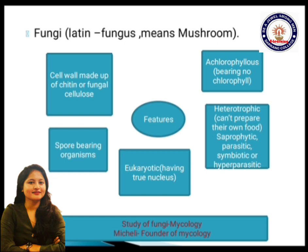Saprophytic mode of nutrition is that type of nutrition in which one organism is dependent on dead and decayed organisms. Parasitic means those fungi which are dependent on a living host for their nutrition. Symbiotic means fungi in association with another organism — for example, lichen, which is an association between algae and fungi, and mycorrhiza, which is an association between fungi and the roots of higher plants. Hyperparasitic means fungi that are parasitized by another fungus or organism.